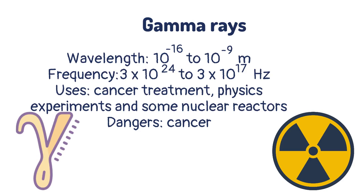Ultraviolet light waves have a wavelength of between 10⁻¹⁶ and 10⁻⁹ and frequencies between 3 x 10²⁴ and 3 x 10¹⁷. They are used in cancer treatments and in nuclear reactors. They can cause cancer so hospitals are very careful to make sure that workers and patients are not overexposed, and all nuclear waste must be disposed of very carefully.